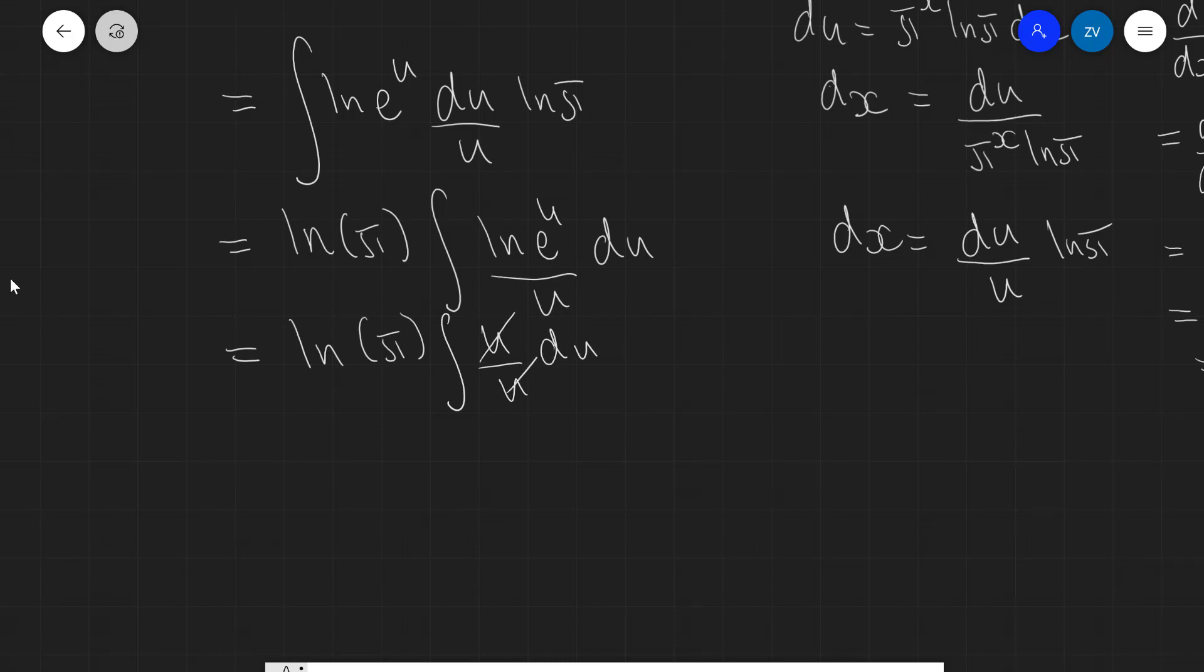This is going to cancel out. And what we're left with is 1 over ln π times the integral of 1 du, which is just equal to u plus a constant c.